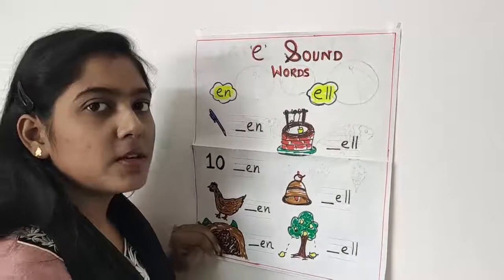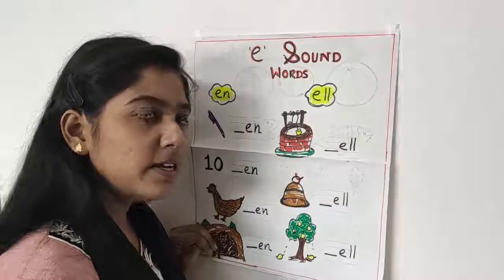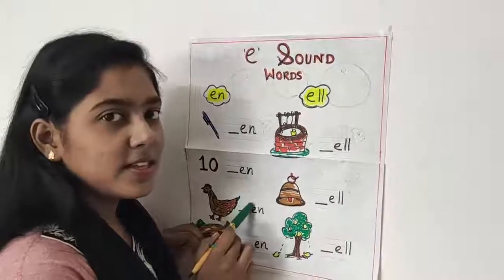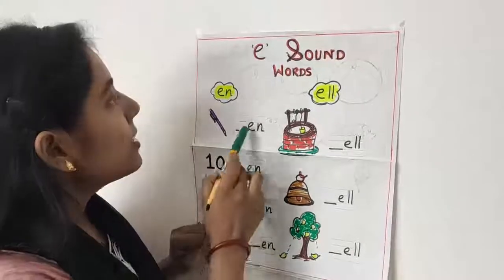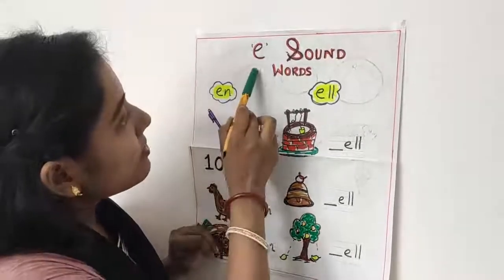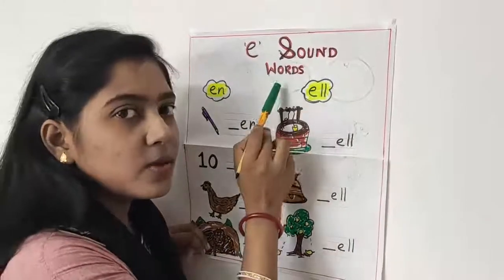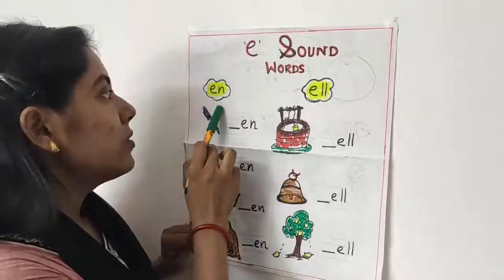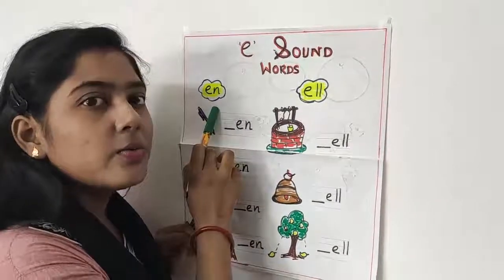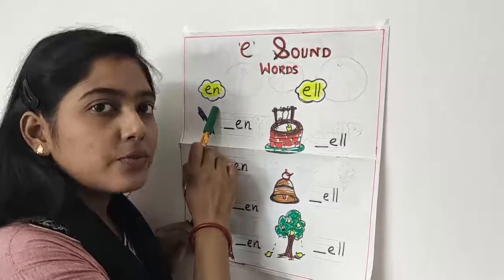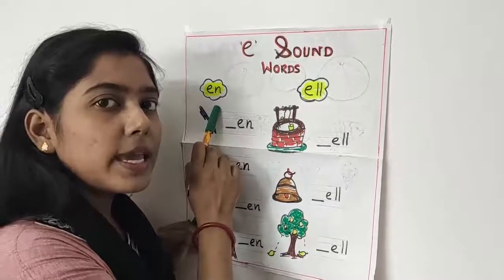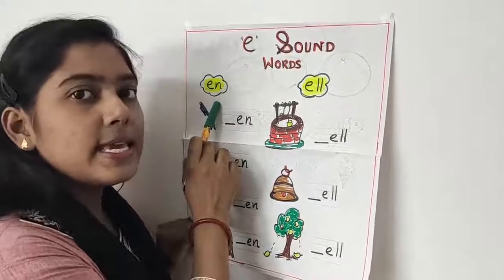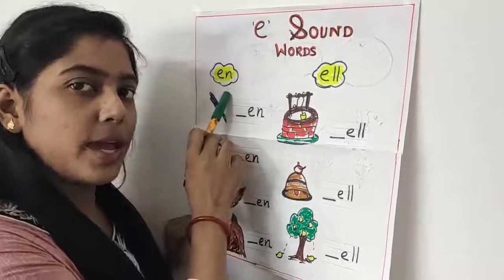Let us learn E sound words. Children, look at the chart. Here I have written E sound words. First we will learn with N sound. Which sound? N sound. E, N, N.